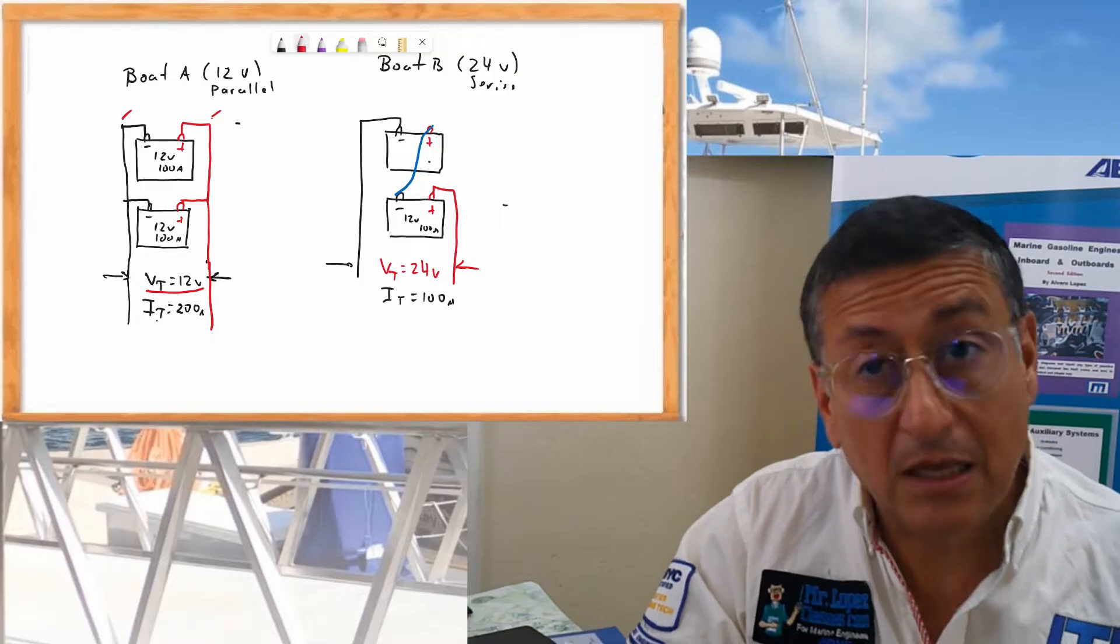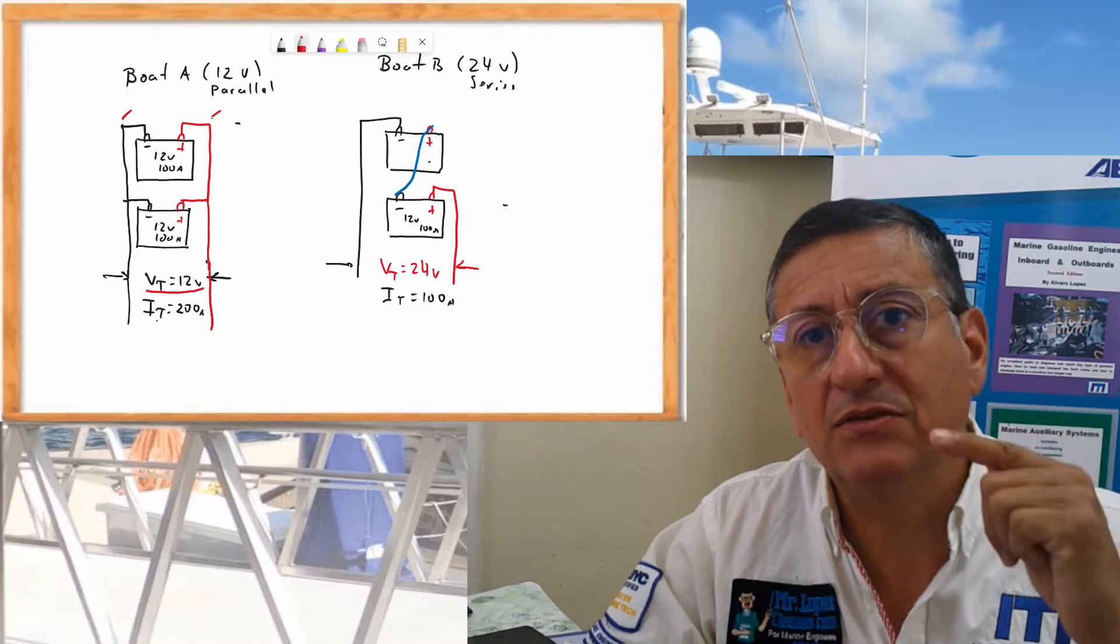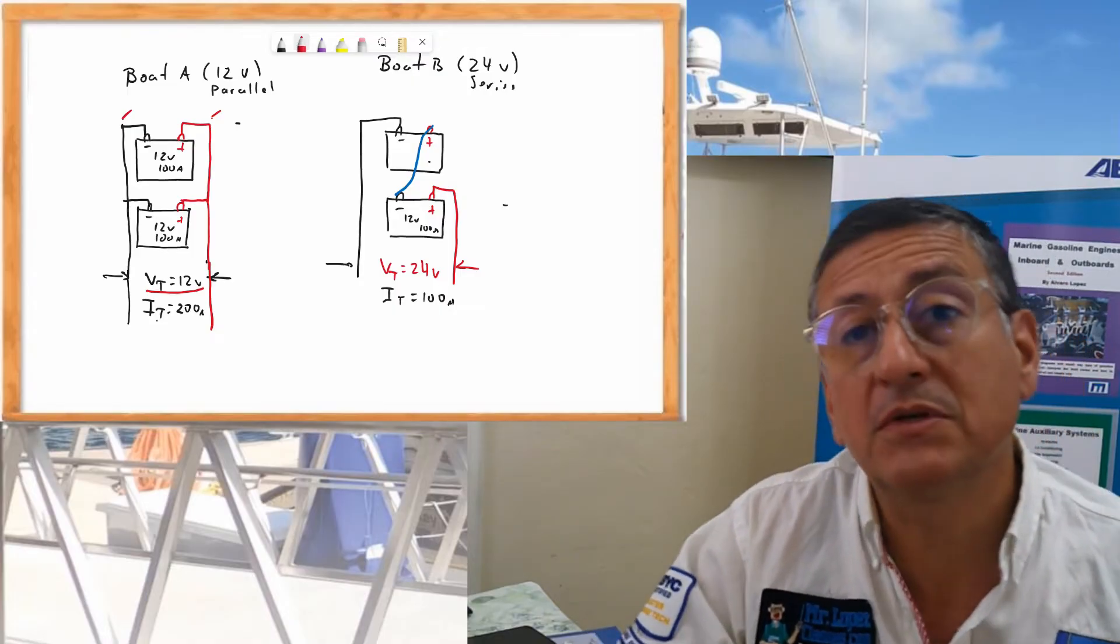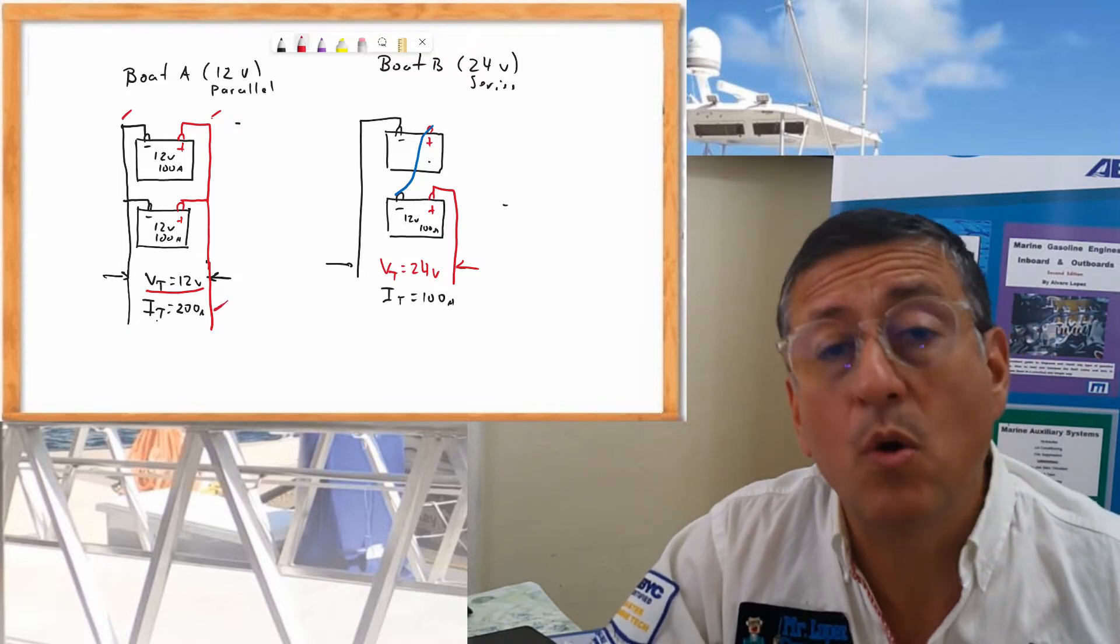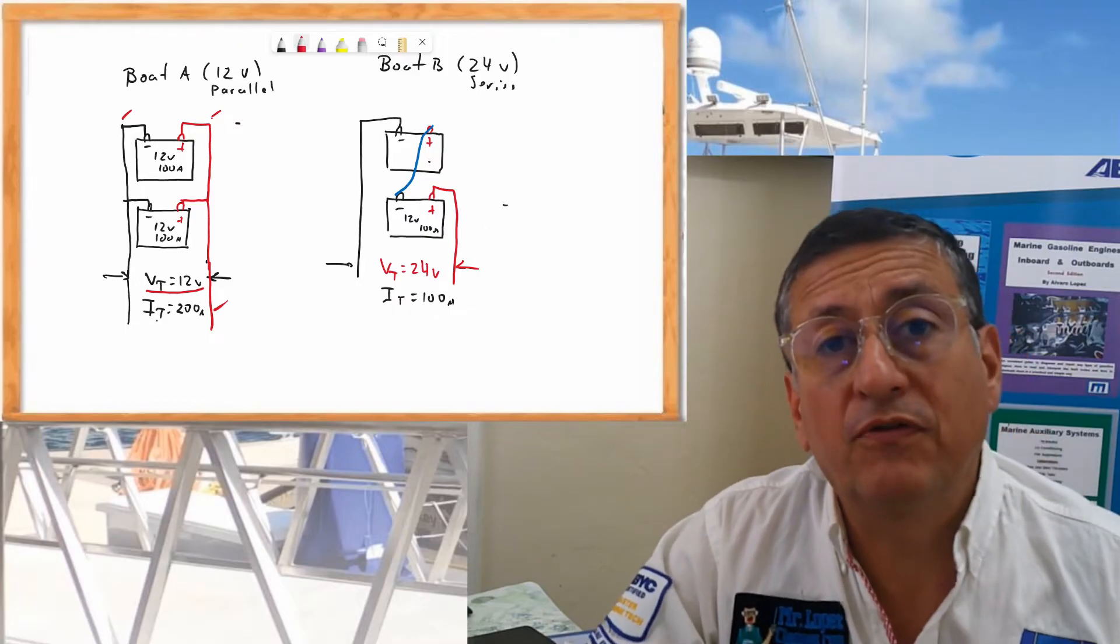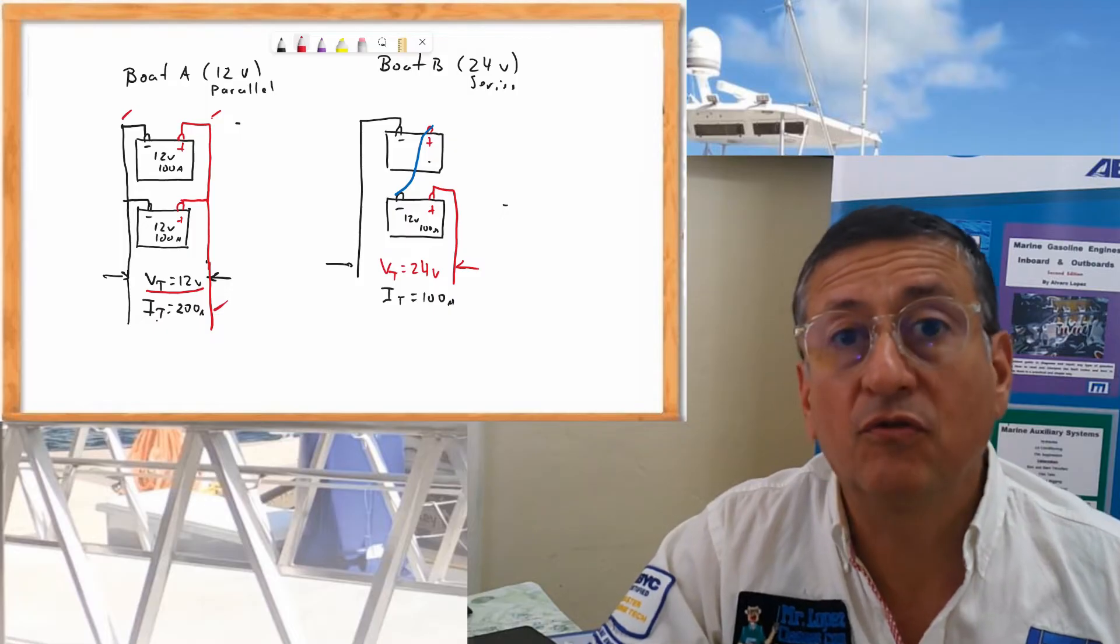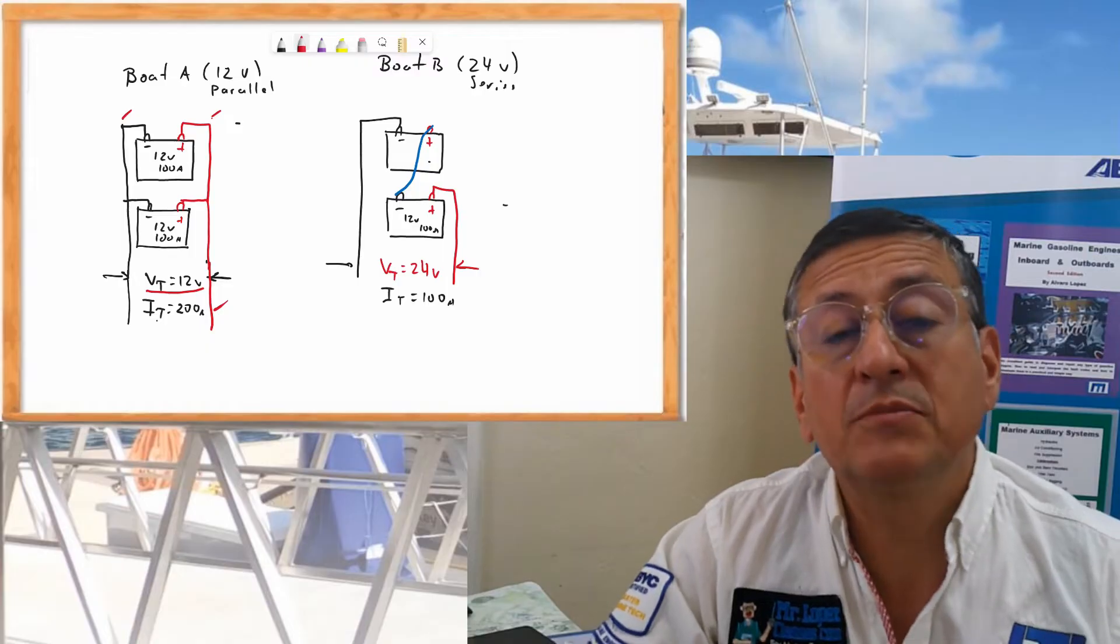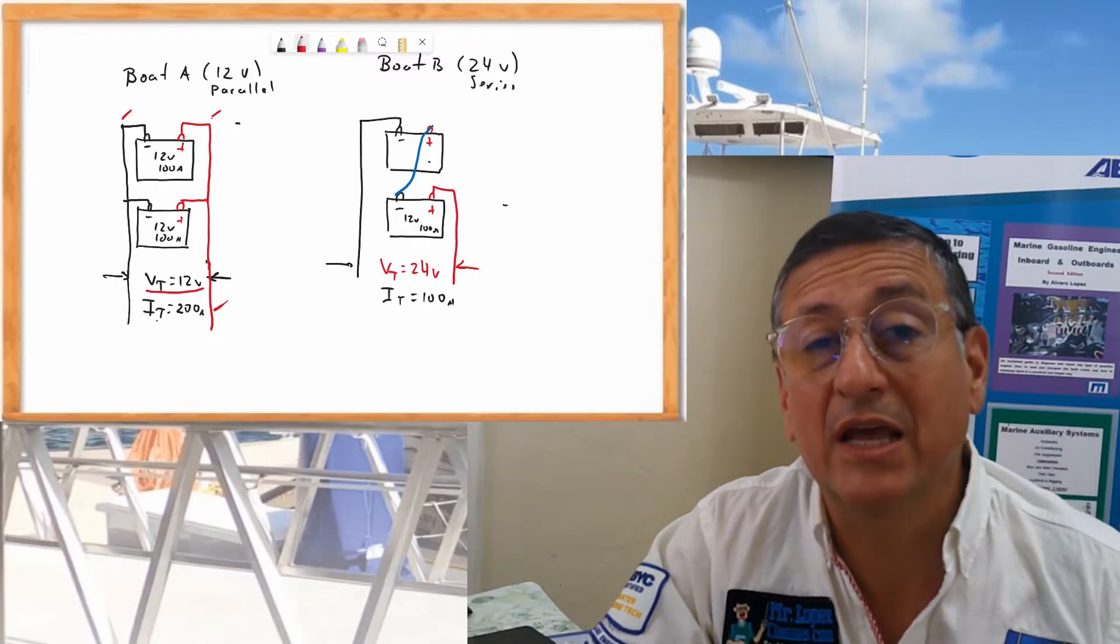And the intensity because it's connected in parallel increases. Remember in parallel the intensity increases. In this particular case is 100 amps and 100 amps is 200 amps. Each battery is 12V 100 amps. This is the output of that connection of two batteries in parallel. Each battery of 12V 100 amps, in the output you have 12V 200 amps because it's parallel connection. Positive with positive and negative with negative.